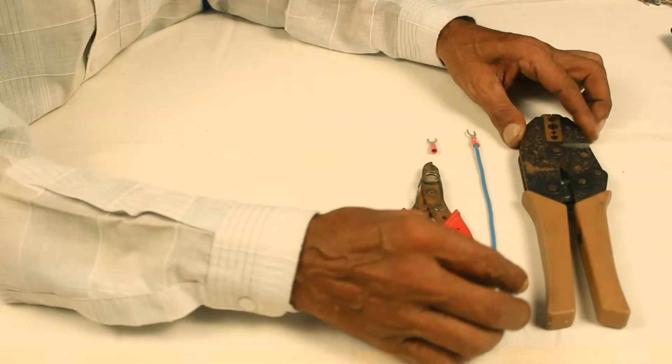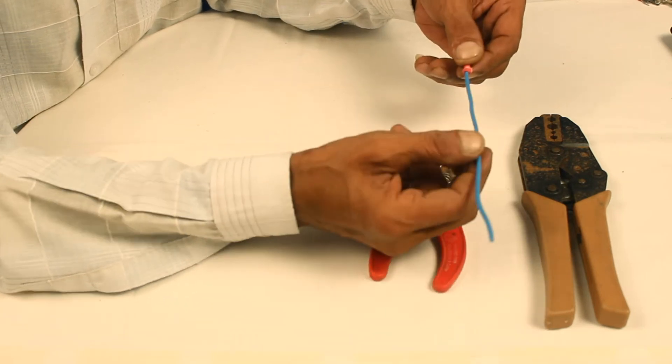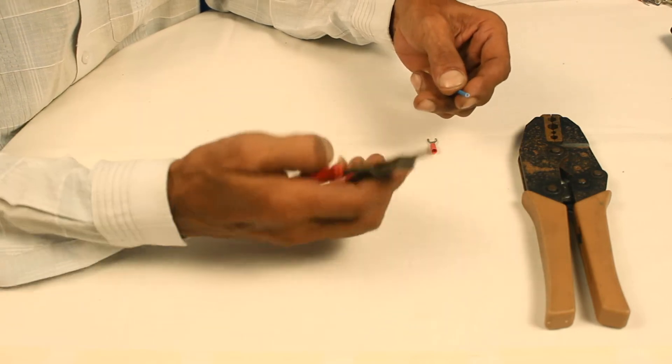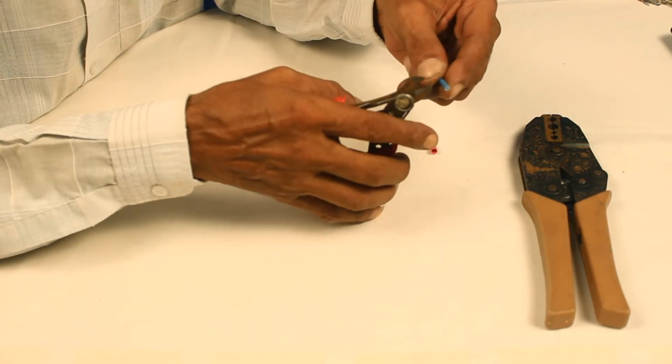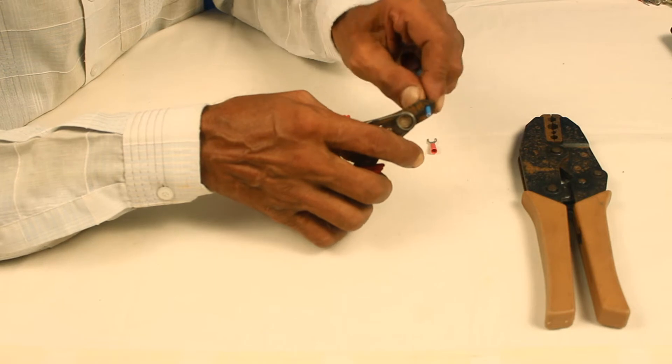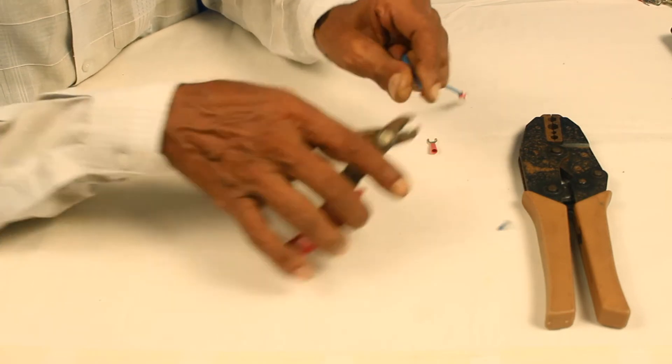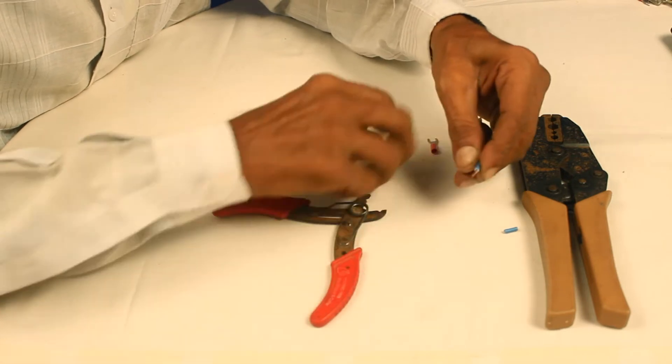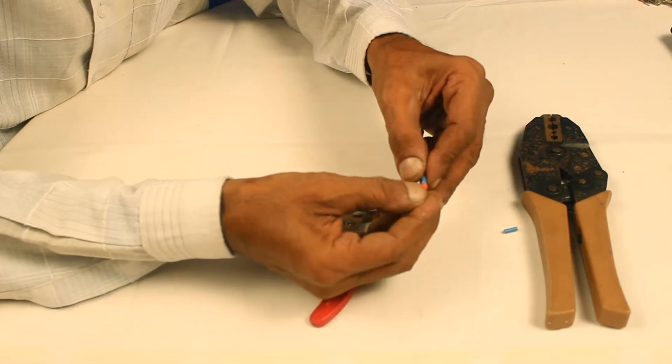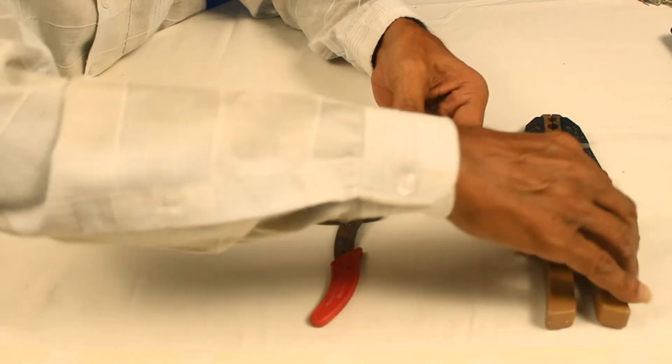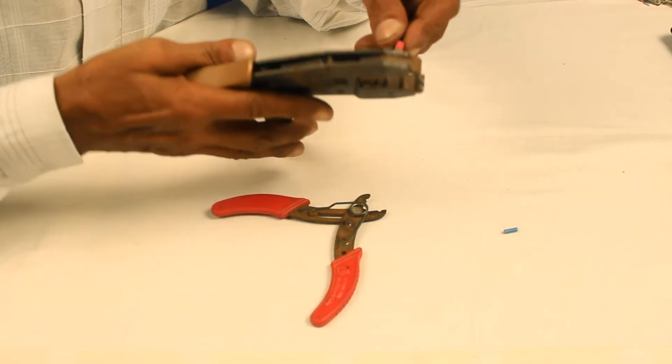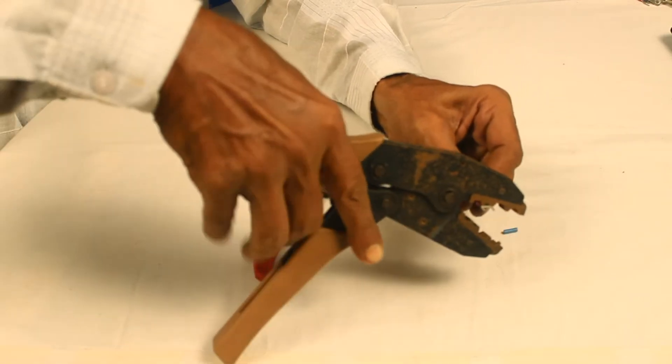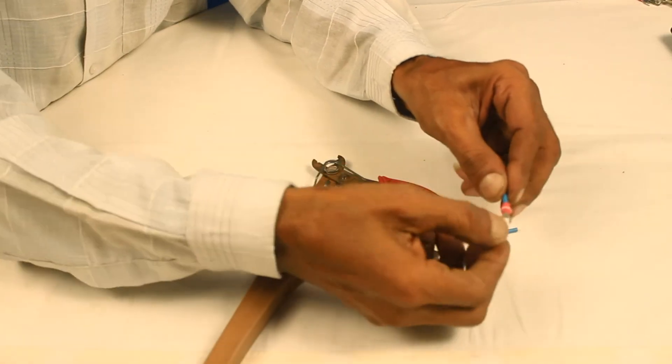A crimping tool is used to attach lugs, terminals, connectors onto cables. No soldering is required and no special skills are required. All you should be capable of is stripping a wire, twisting the strands, inserting it into a lug and crimp. There you go.